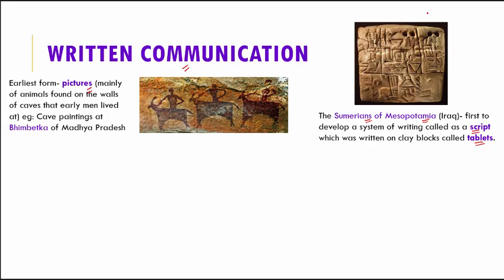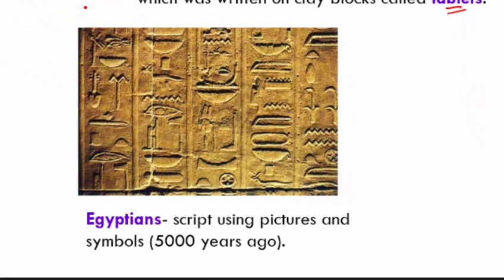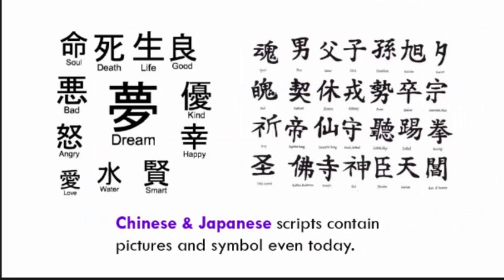So pictures were replaced with symbols. The Egyptians used a script which combined both pictures and symbols, used nearly five thousand years ago — you can see here a combination of pictures and symbols. Similarly, Chinese and Japanese scripts also contain pictures and symbols, and even today their languages are built on pictures and symbols.